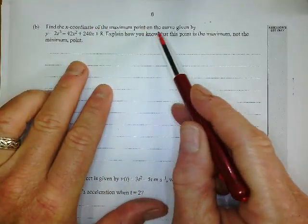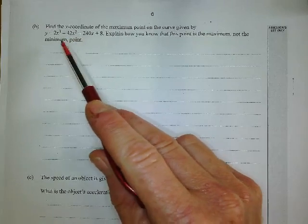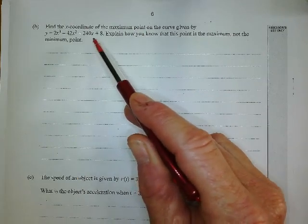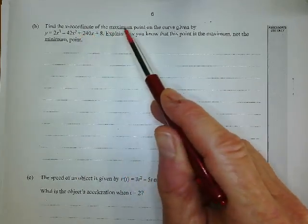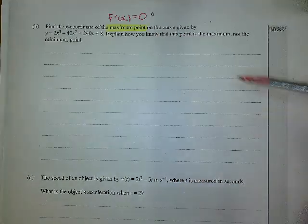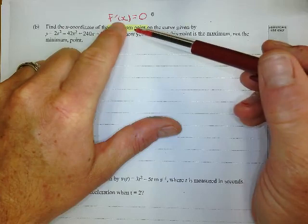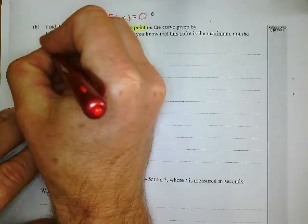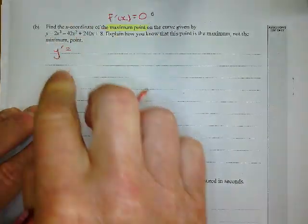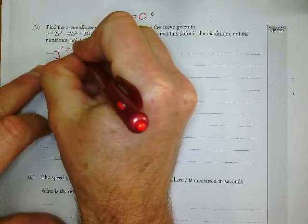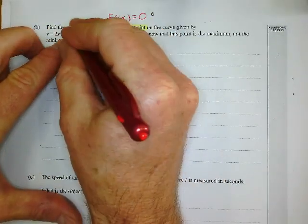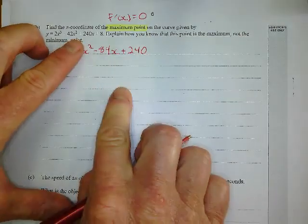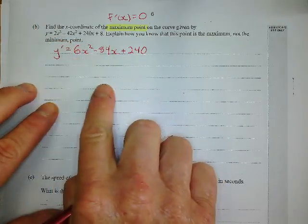Next one. Find the x-coordinate of the maximum point on the curve given by this equation here. Explain how you know that this point is the maximum, not the minimum. First of all, let's look at this. Find the x-coordinate of the maximum point on the curve. Classic calculus question where we're going to set the gradient equation equal to zero and solve for x. So let's do that. Looks like we're going to derive this equation right here. And we can do that by now. Now, when I derive that, I get 6x squared minus 2 times 42 is 84x plus 240.